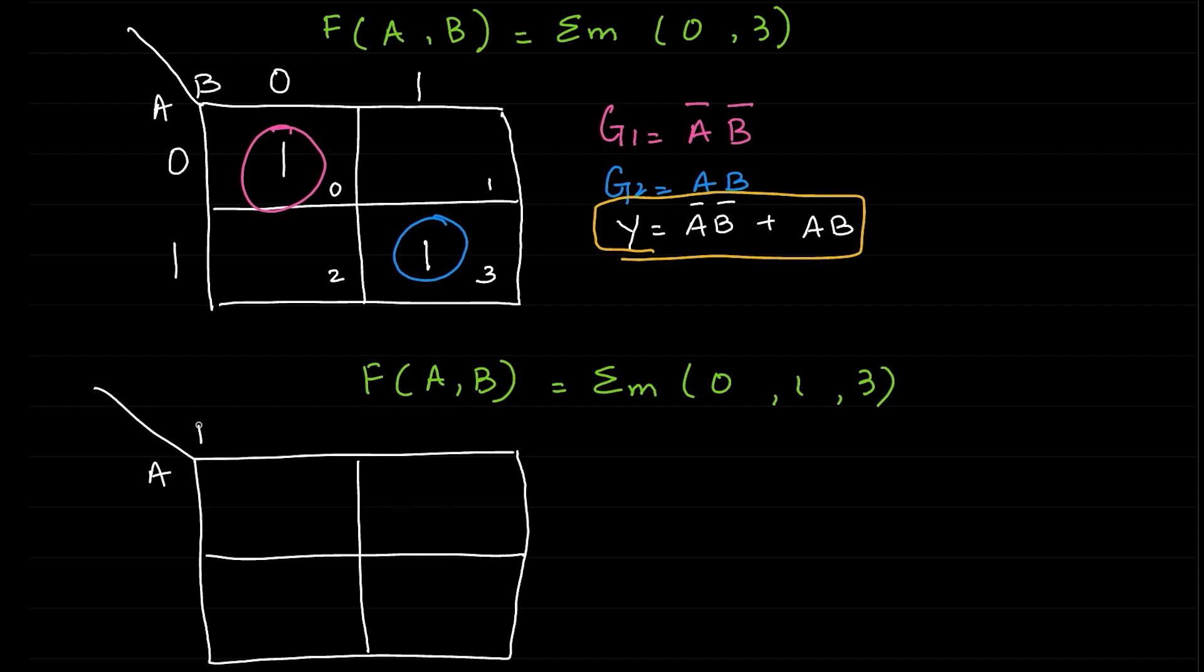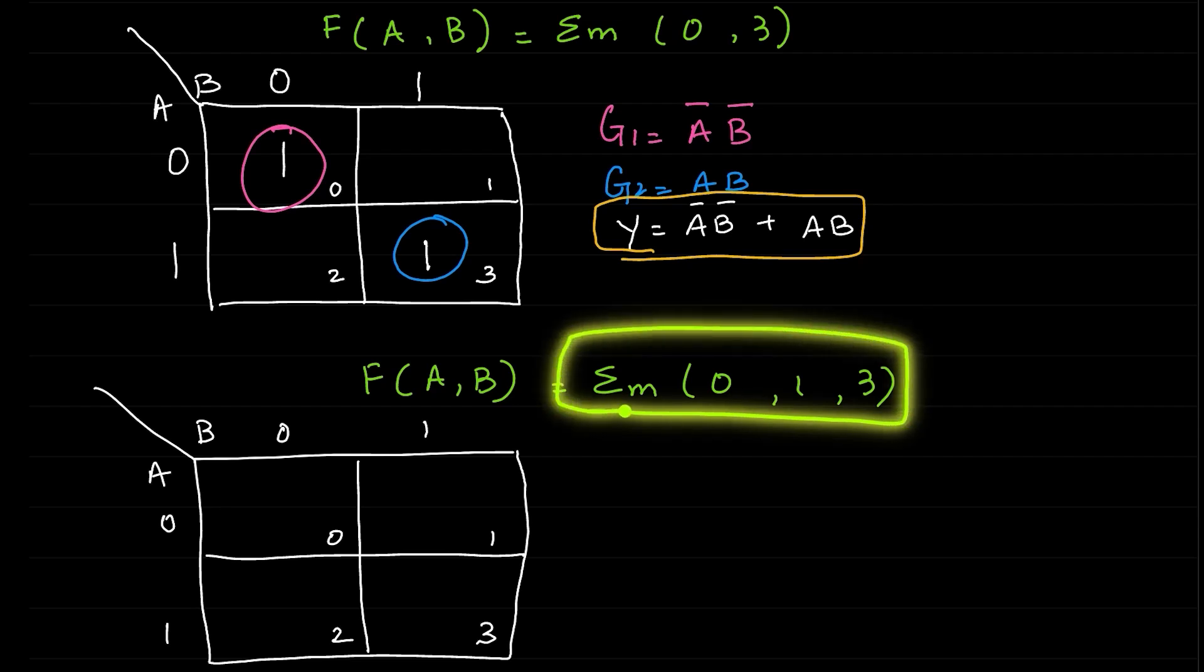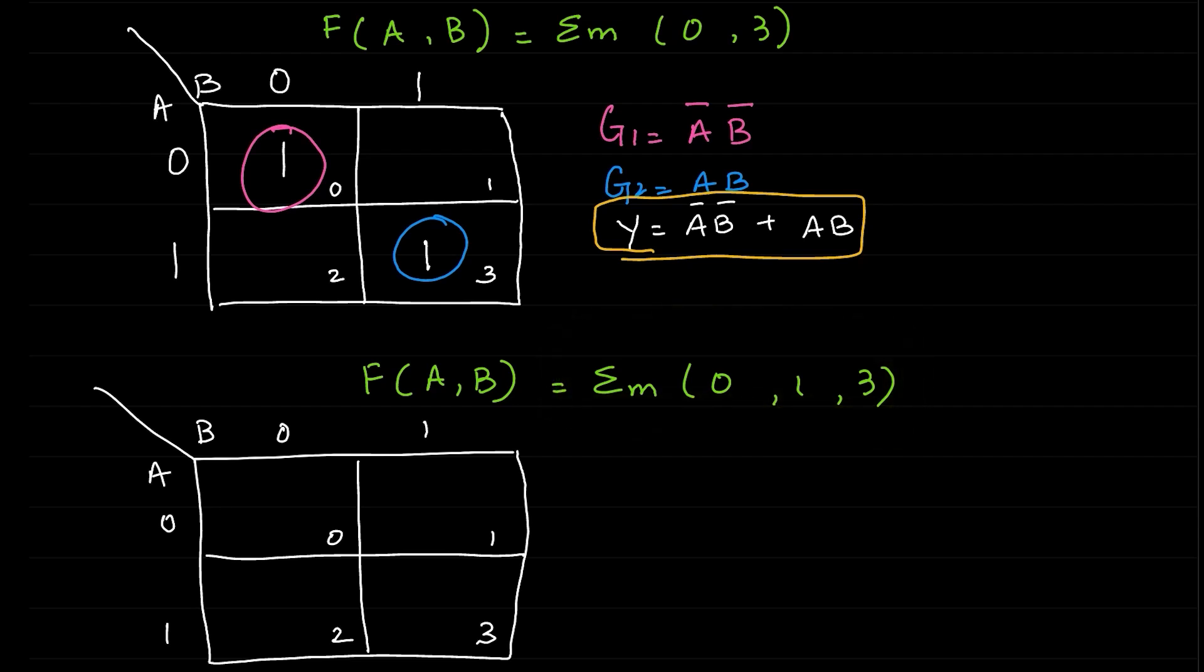Call this one A and call this one B. 0, 1, 2, and 3 will be the numbers given incrementally. B 0, B 1, B 0, and B 1 again. Now we have to find out where in the cell we need 1s. In 0, 1, and 3 we need 1s, 0, 1, and 3, that's where we need 1s.